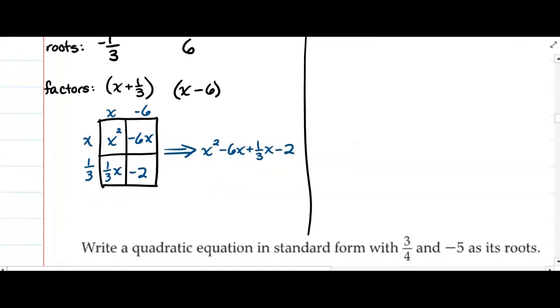At this point, we do have some like terms here. Negative 6x and 1/3 x are like, so I do need to combine them. And again, you can use a calculator: negative 5 and 2/3, or negative 17/3.